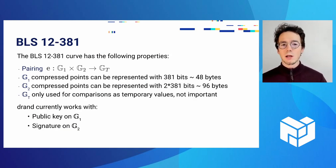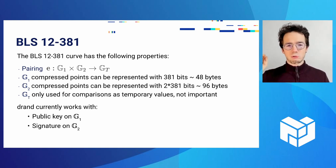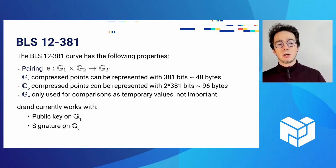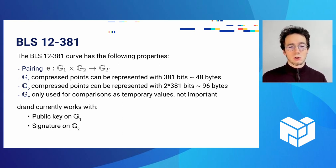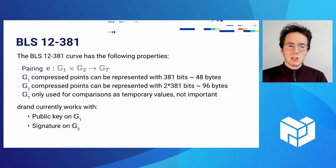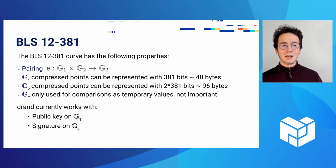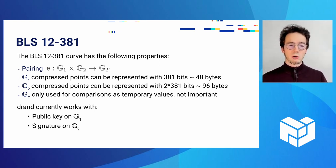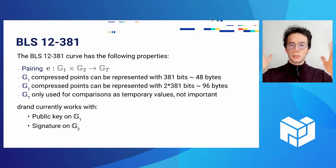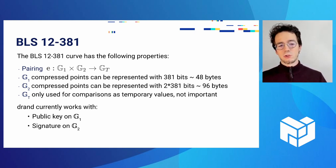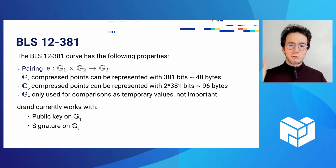BLS12-381 is an elliptic curve where you have two groups and a pairing operation from G1 and G2 onto a target group GT. G1 is a regular group of size 381 bits, while G2 is an extension field of dimension two, so it has two coordinates of 381 bits each. GT is the 12th extension field, so it has 12 coordinates — but that's less important since we only ever store G1 or G2 values. Currently, DRUN has its public key on G1 (48 bytes) and signatures for each beacon on G2 (96 bytes).